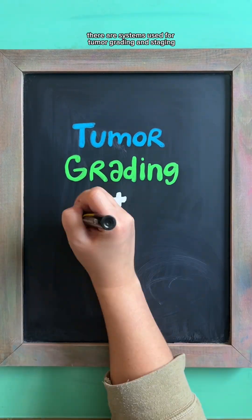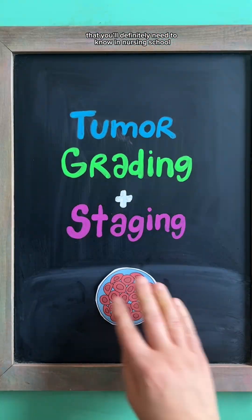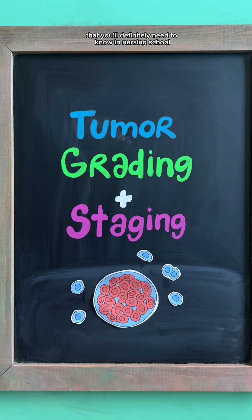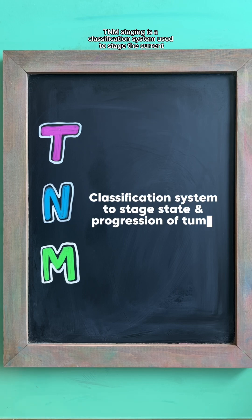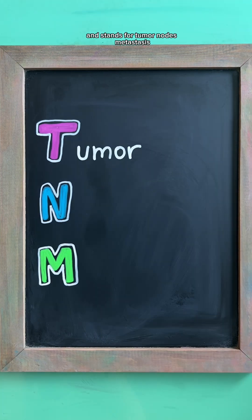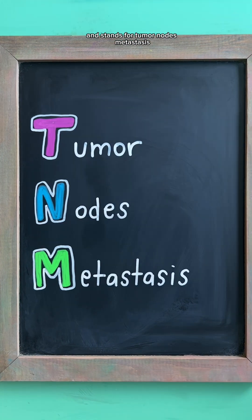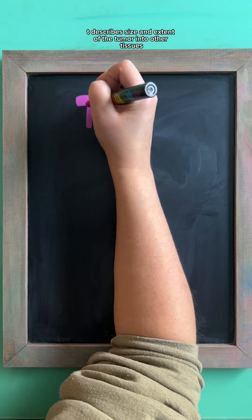There are systems used for tumor grading and staging that you'll definitely need to know in nursing school. TNM staging is a classification system used to stage the current state and progression of a tumor, and stands for tumor, nodes, and metastasis.